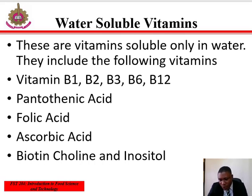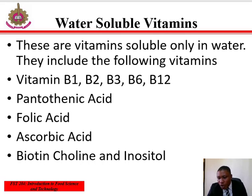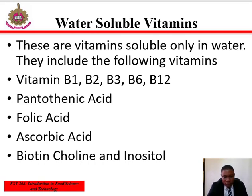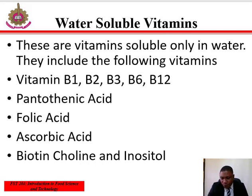Pyridoxine, which is vitamin B6, found mostly in whole grain cereals, vegetables, and meats, is a substituted pyridine ring structure that exists in three forms. Deficiency in humans consists of increased irritability, convulsive seizures, and kidney stones.